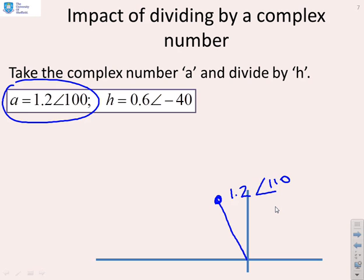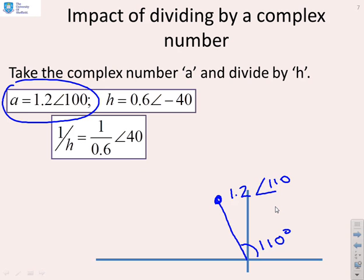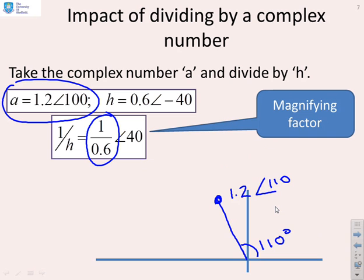Now we want to know what happens if we divide by h. If I'm dividing by h, the scaling factor is now 1 over 0.6, because I'm essentially dividing by 0.6. So what happens if I divide 1.2 by 0.6? I'm going to end up basically at 2. So I'm going to stretch it to here, 2 arg 110.